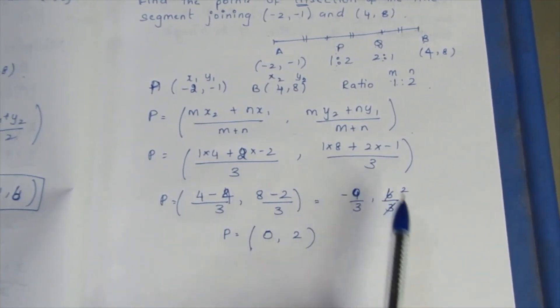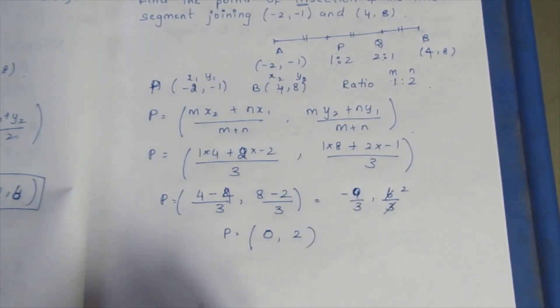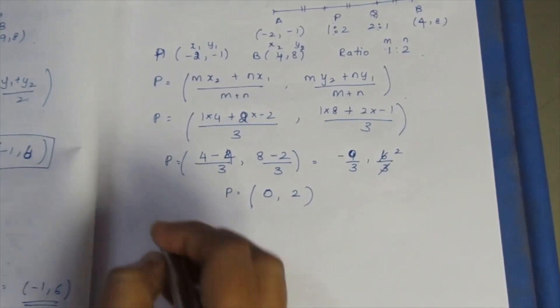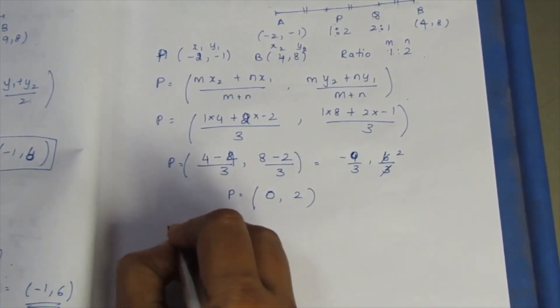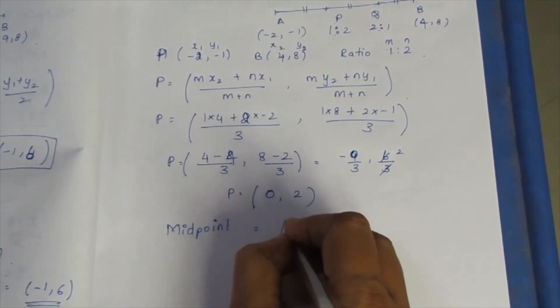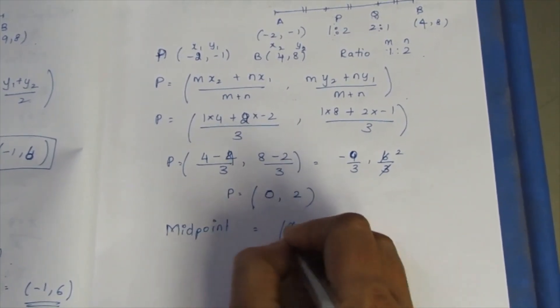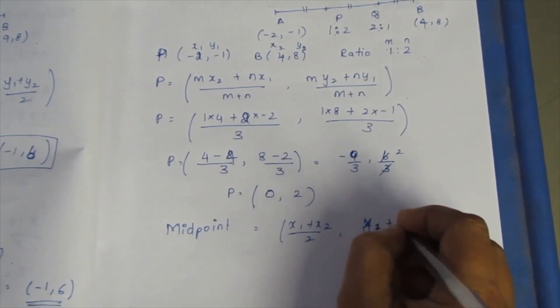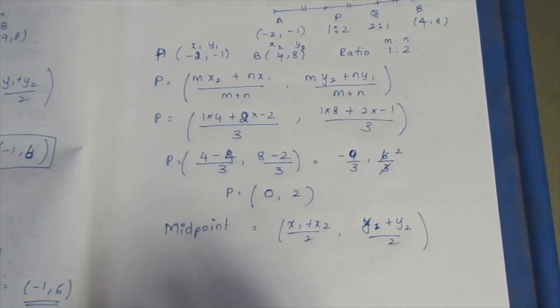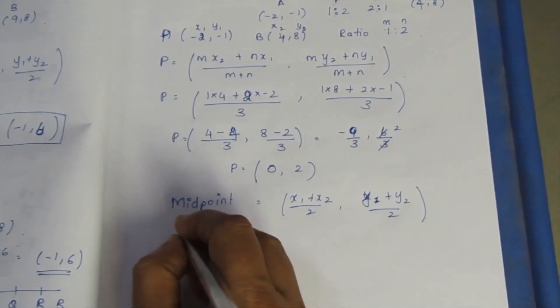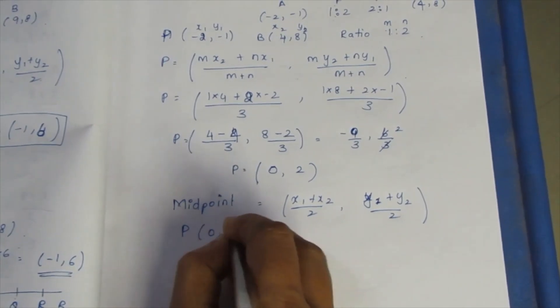P and B point Q use midpoint, so midpoint formula: x1 plus x2 by 2, midpoint formula y1 plus y2 by 2.